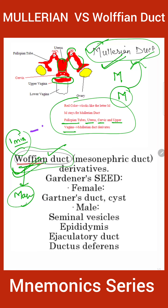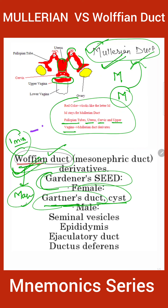But still, in females it forms the Gartner's duct. So the mnemonic for Wolffian duct is 'Gartner SEED' — Gartner forms in female, and SEED stands for: S — Seminal vesicle, E — Epididymis, E — Ejaculatory duct, D — Ductus deferens.